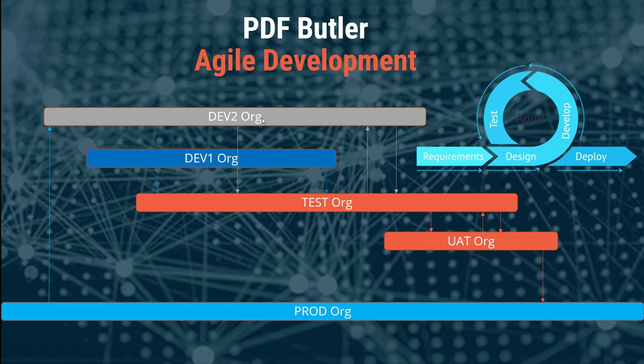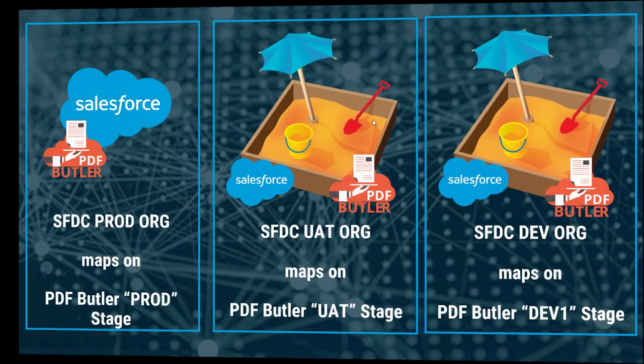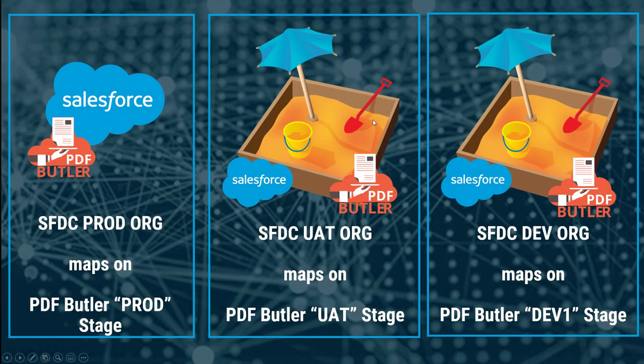on a development org or a UAT org. How does this work? Let's go into detail. In your project you probably have a production environment and multiple sandboxes. Every sandbox has a certain reason to exist, and that reason, for instance, is to test or to do development and customizations into your Salesforce environment.